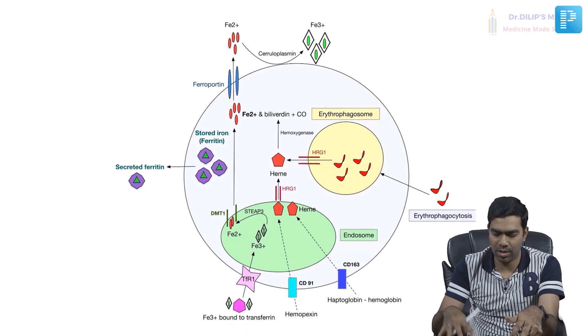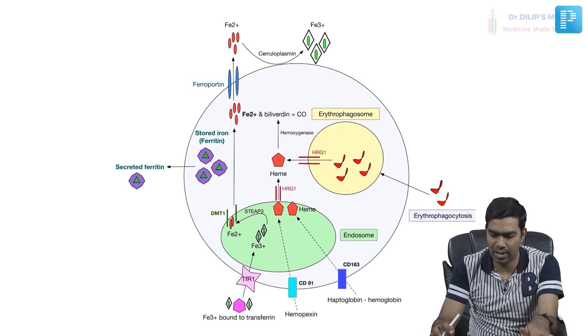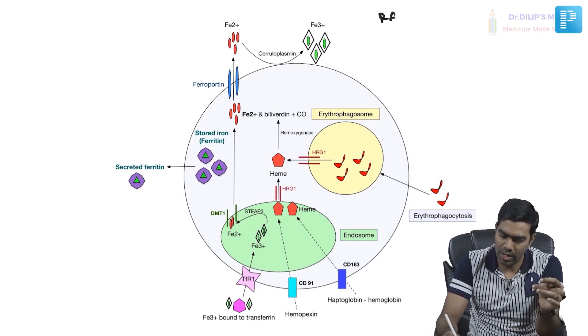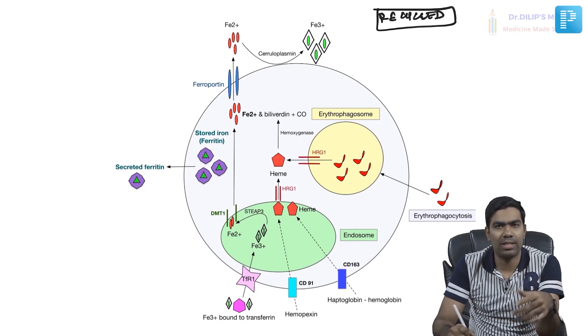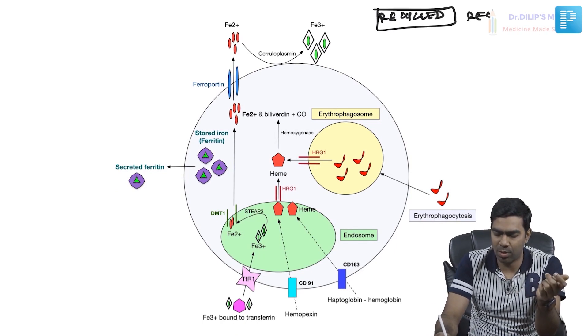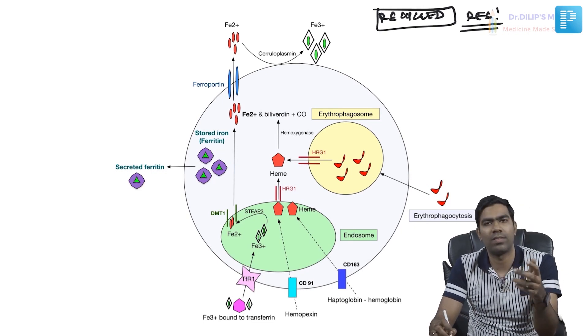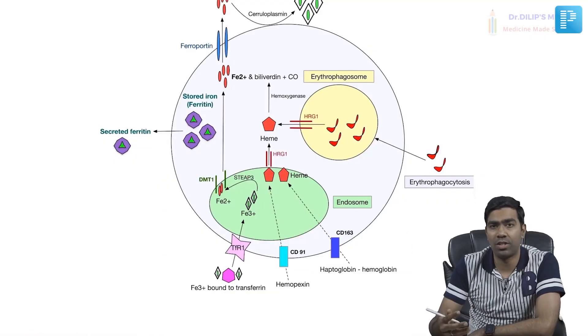This image shows the exact recycling of iron — how iron is recycled. This is a typical example of the RES, that is the reticuloendothelial system, otherwise called the monocyte-macrophage system. This system includes a lot of monocytes and macrophages scattered throughout the body. In the reticuloendothelial system, there are four processes by which the RES can get iron.